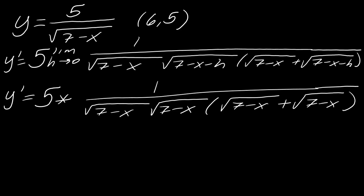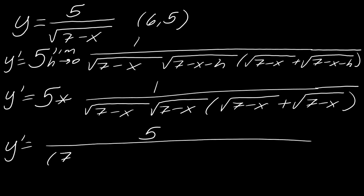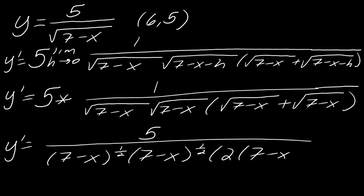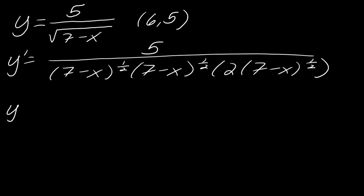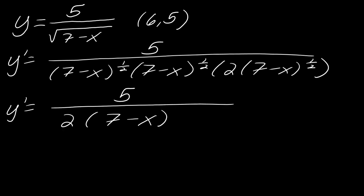So lots of square roots of 7 minus x. Now to make my life a little bit easier, I'm going to rewrite all of these radicals with rational exponents and collect like terms. So this will become y prime equals — I'll put the 5 on top — and the square root of 7 minus x becomes 7 minus x to the 1/2, as will the other one. And this is 2 times 7 minus x to the 1/2. So those are like terms, I can add those up. I have three terms of (7 minus x) to the 1/2, so this becomes y prime equals 5 over 2 times 7 minus x to the 3/2.